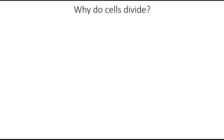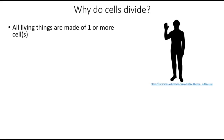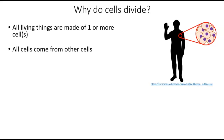All living things are made of one or more cells. If we were to take a very close look at you, a large multicellular organism, and zoom way in, we would find that you are made of many trillions of individual cells, and all of these cells came from other cells. If we rewind and go back in time to the very first moment that you were genetically you, you were just one cell. That one cell became two cells, those two cells became four cells, and so on until you became the many trillions of cells that you are today. How did they do this? Through cell division.